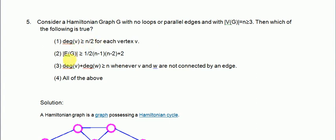Option number 2 is basically a property, which states that the number of edges is greater than or equals to ½(N−1)(N−2) + 2.